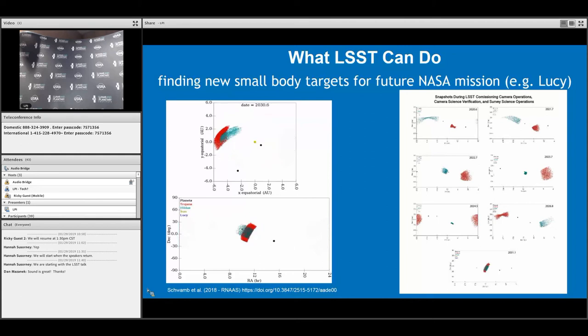Especially in the L5 cloud of the Jupiter Trojans, there's not that many targets right now that Lucy could go to, but LSST, even in the main wide-field survey, could potentially find a target for Lucy to go to after a particular encounter.